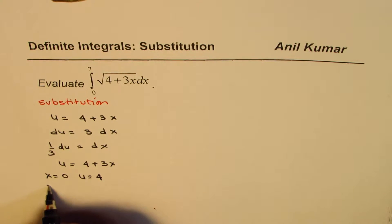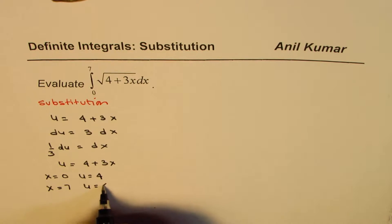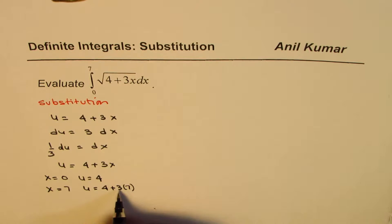4 plus 0 is 4. And if x is equal to 7, in that case, u will be equals to 4 plus 3 times 7. Which is, 3 times 7 is 21, and we can write this plus 4, 25.